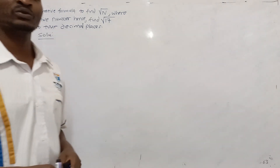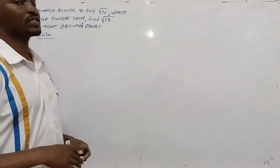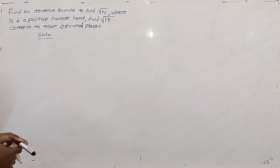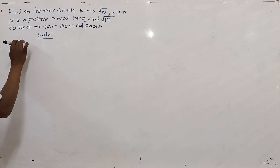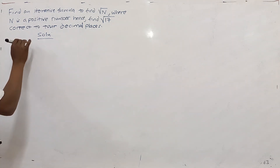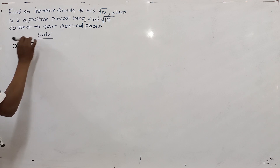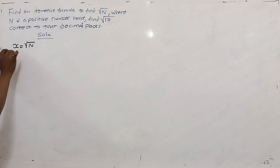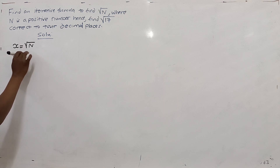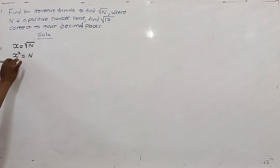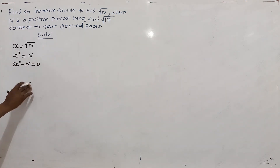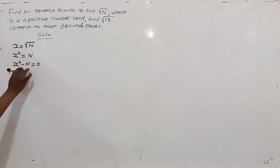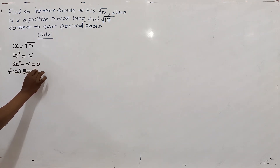The root that we want to find is a solution, or is a zero, of a function f of x. So we have to start by creating a function f of x. We are going to say that the solution of f of x is the root of the positive number n. If we square both sides, we get x squared is equal to n. Now we can write x squared minus n is equal to zero, so that now we have f of x is equal to x squared minus n.